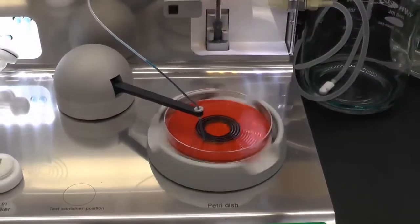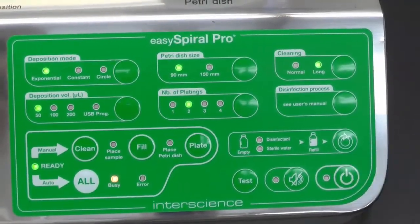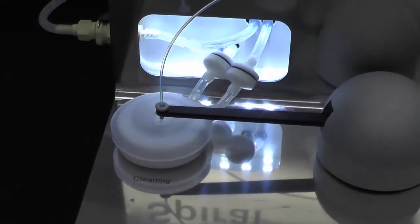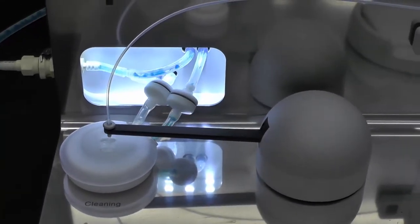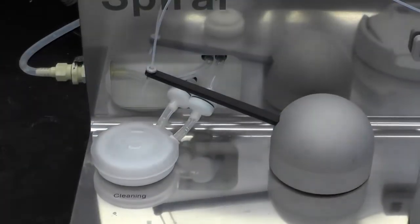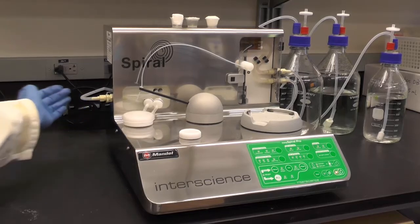After you finish, press the power button on the control panel and the instrument will automatically clean itself before shutting down. Wait until the light is off, then turn the power switch at the back to the off position.